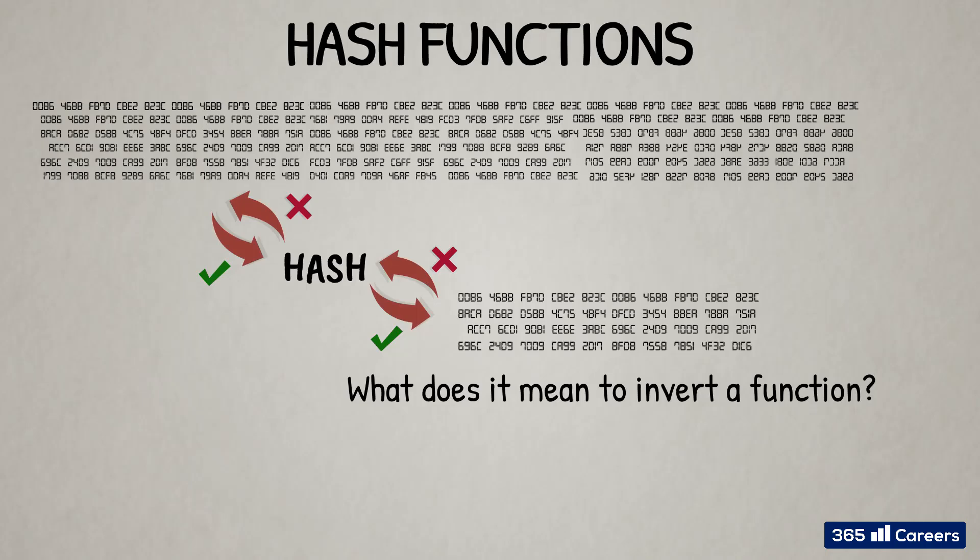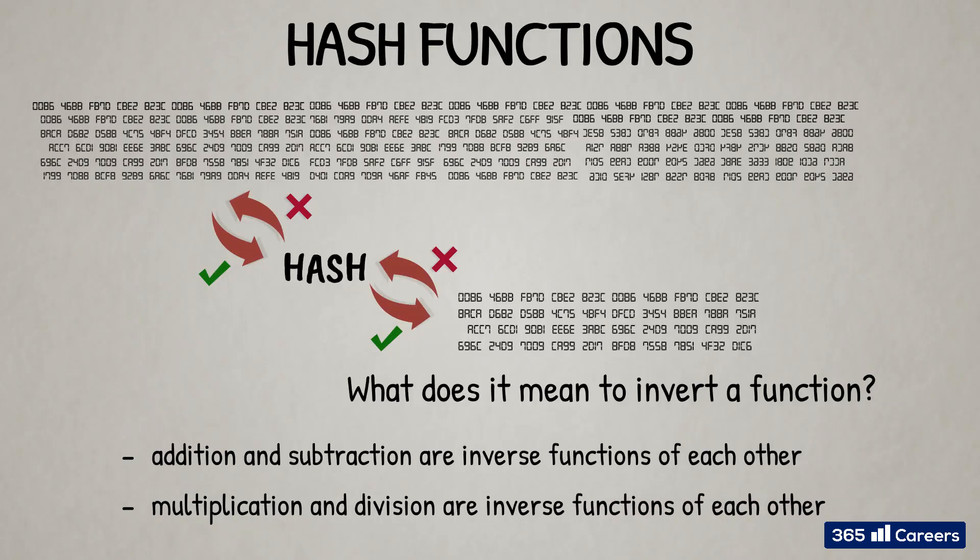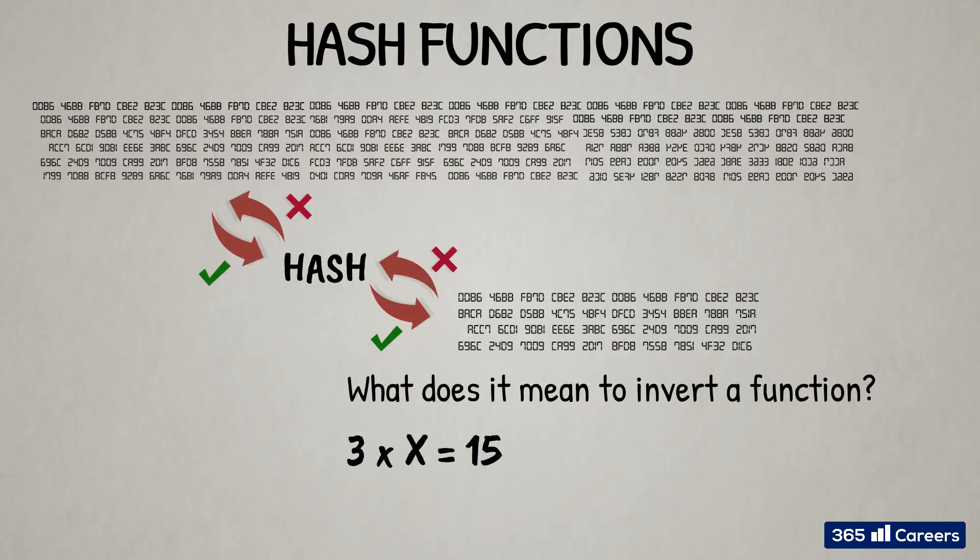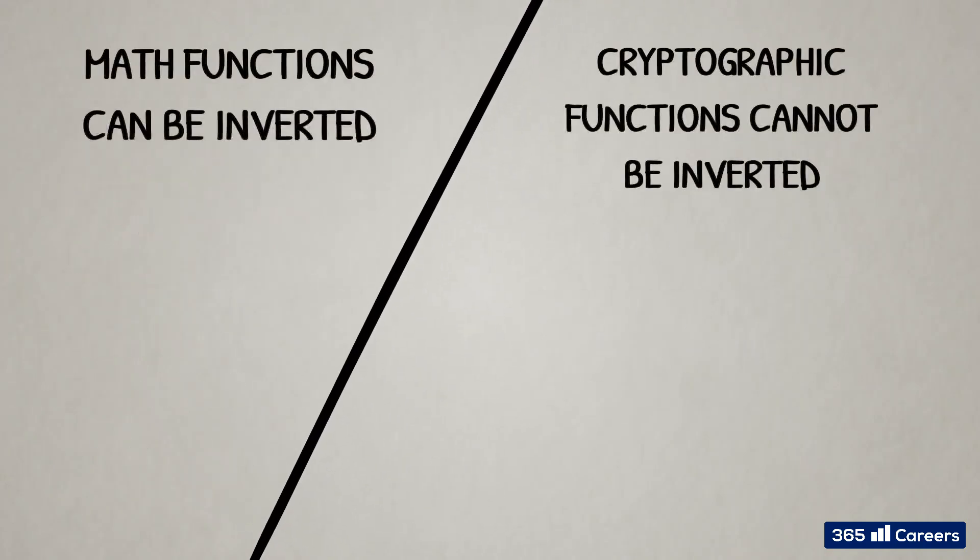Addition and subtraction are inverse functions of each other. Multiplication and division are inverse functions of each other. We can always construct equations with these functions to find any unknown variable. For example, 3 times x equals 15, x equals 15 divided by 3 equals 5. Many mathematical functions can be inverted in a similar way.